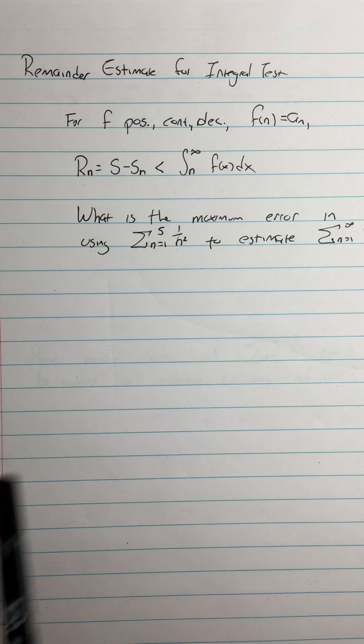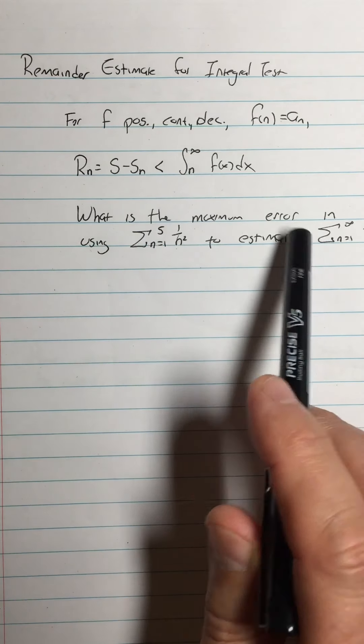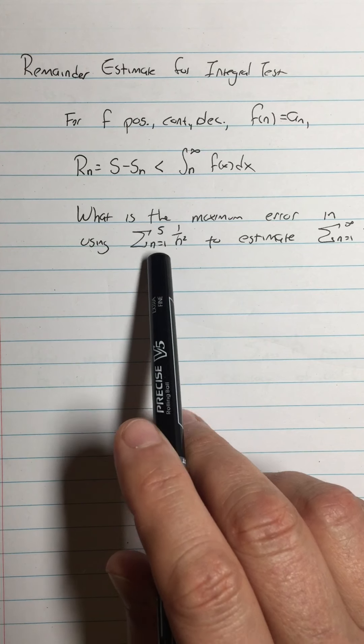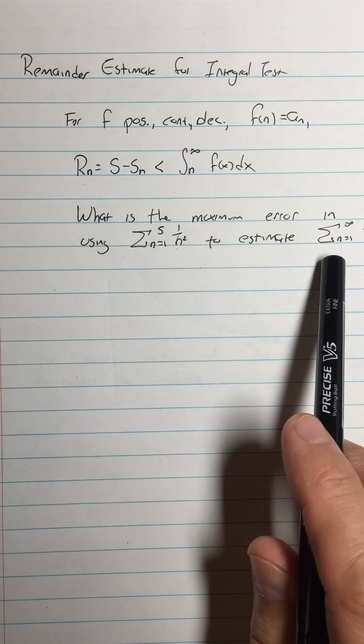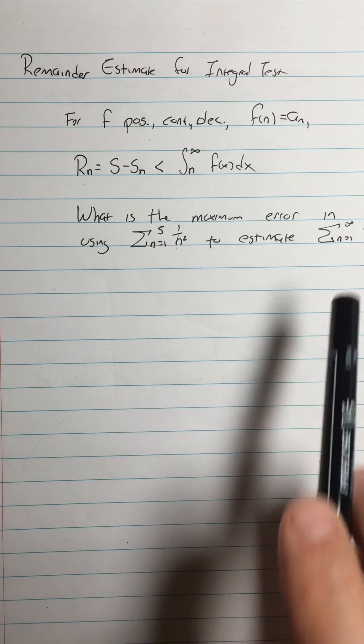So here's the kind of question we can answer now. What is the maximum error in using the sum from n equals 1 to 5 of 1 over n squared to estimate the sum from n equals 1 to infinity of 1 over n squared?